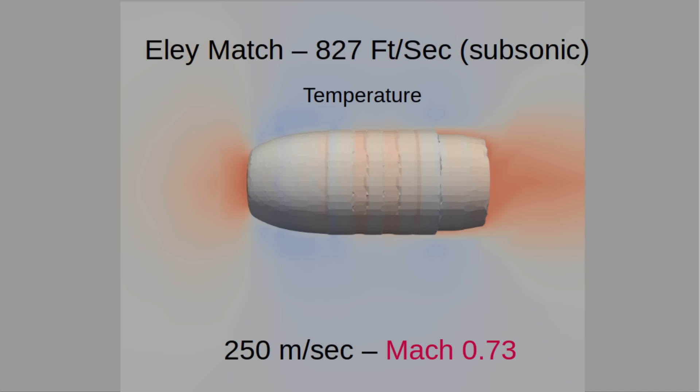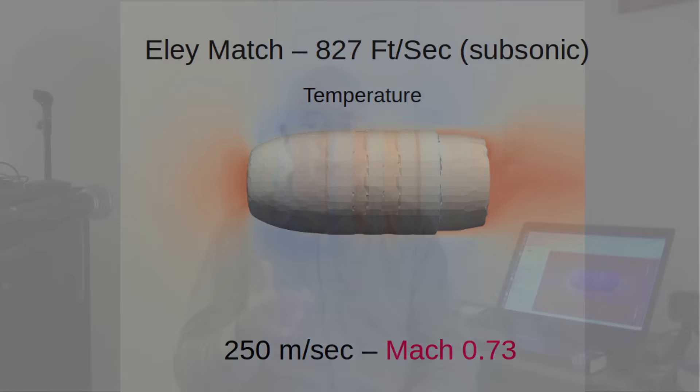Just for completeness, here's what the temperature of the air looks like. That pressurized air in the front is heated up by compression, but there's also a hot wake of air behind the bullet — that's basically energy the bullet is giving up to the atmosphere, slightly heating up the air as it goes through. Of course, the bullet slows down because of that energy transfer.